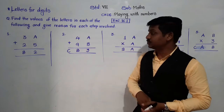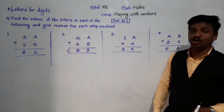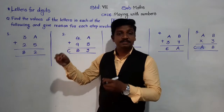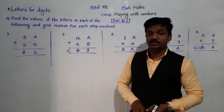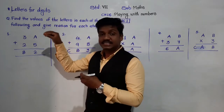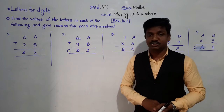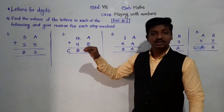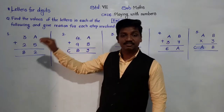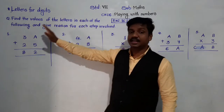If you observe exercise 16.1, there are examples based on addition and multiplication. Instead of some digits, they have used alphabets — English alphabets. So, what we have to do is find the values for the alphabets, that means find the digits which will replace the given alphabet.